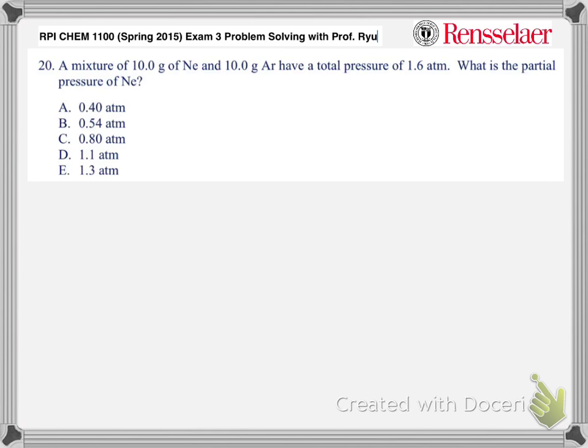Okay, so this is a question of partial pressure, because it is a mixture of two gases, and each of them, the mass was given. Argon and neon has 10 grams, and the total pressure. So total pressure, which is 1.6 atm, is a summation of partial pressure of neon and partial pressure of argon.